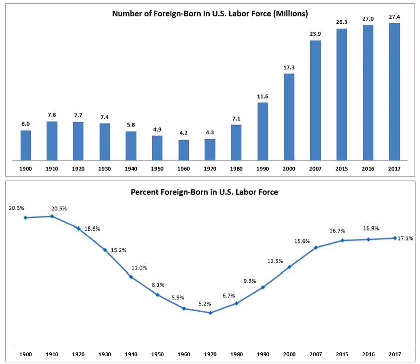It created a seven-category preference system, which gave priority to relatives of U.S. citizens and legal permanent residents and to professionals and other individuals with specialized skills. Immediate relatives and 'special immigrants' were not subject to numerical restrictions. Some of the 'special immigrants' include ministers, former employees of the U.S. government, and foreign medical graduates, among others.